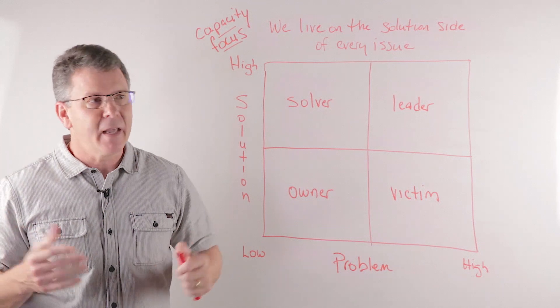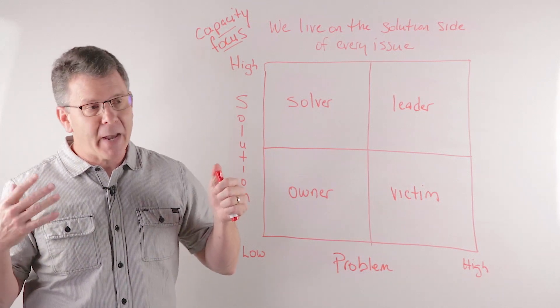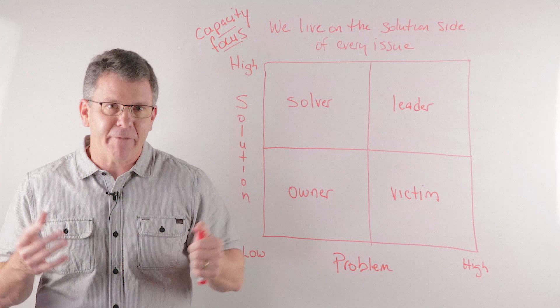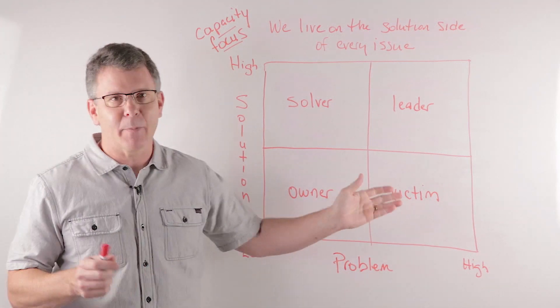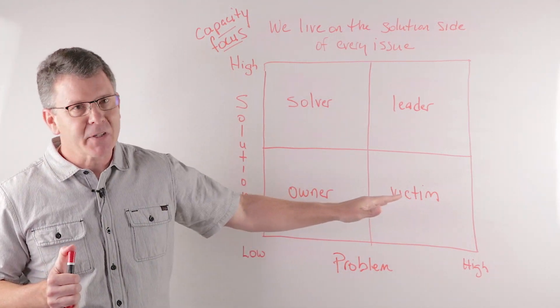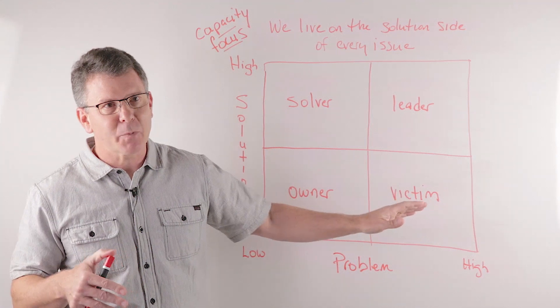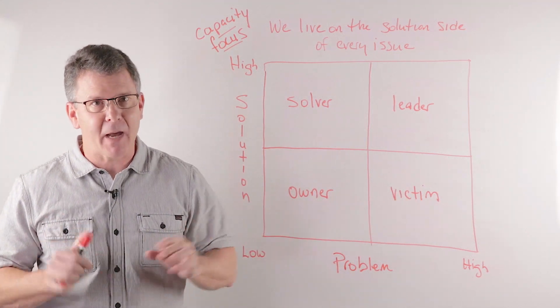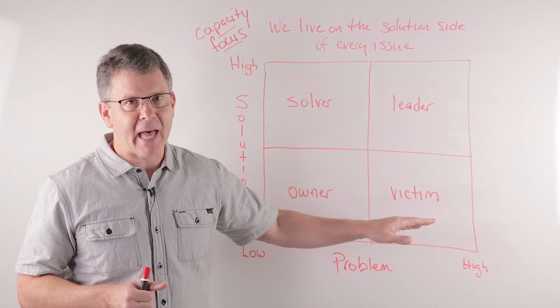This person typically has a victim mentality. It's woe is me. They're pessimistic. They always see the glass half empty. They are always complaining about things. And that kind of person is definitely in your church and they're in my church, but they shouldn't be on your leadership team. Anyone can have a victim mentality.